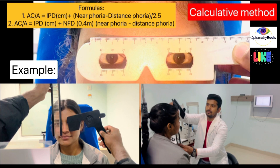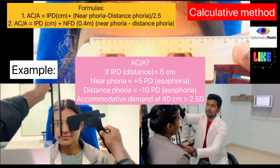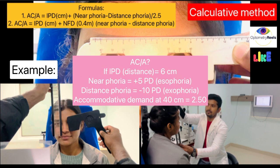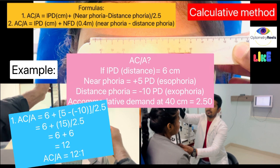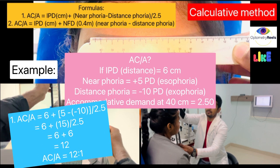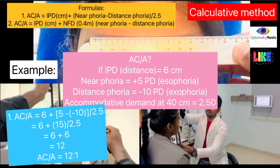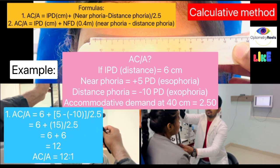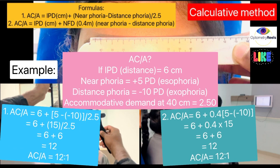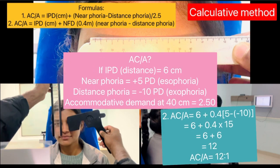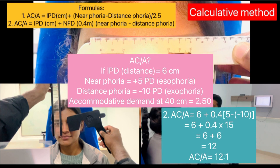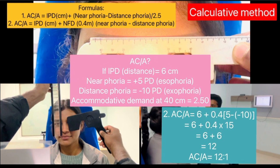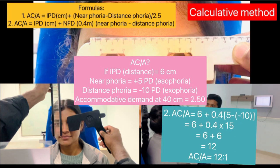Okay, let's understand this with an example. What will be AC/A ratio if IPD is 6 centimeters, near phoria is 5 PD eso, distance phoria is 10 exophoria? Considering the accommodative demand for 40 centimeters as 2.5, if you put these values in formula 1, the AC/A ratio will be 12:1. Again, if you put these values to the second formula by considering the near functional distance as 0.4 meters, again the AC/A ratio will be 12:1.